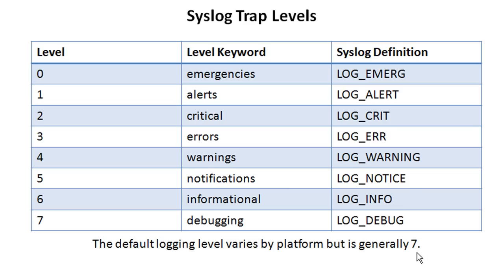Now that's not specific to what we're using. When we're sending these to a remote host via the logging host configuration, the default logging level is actually six, or informational, as we saw on the last slide. Luckily, you can check this with the verification command we'll get to later — show logging — which will show you what the trap level is. It will give you the level keyword, but not the level number.